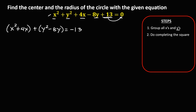Then after grouping all x's and all y's, do the completing the square. In completing the square for x, take this number — we have 4 — then divide by 2 and take the square. So 4 divided by 2 is 2, then to the power 2, this is equal to 4.